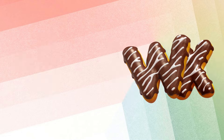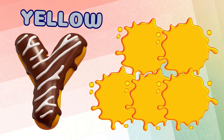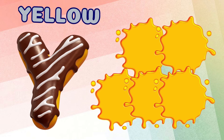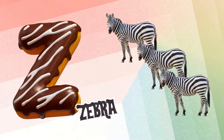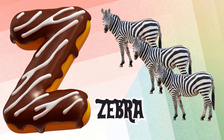Y is for yellow, ye-ye-yellow. Z is for zebra, z-z-zebra.